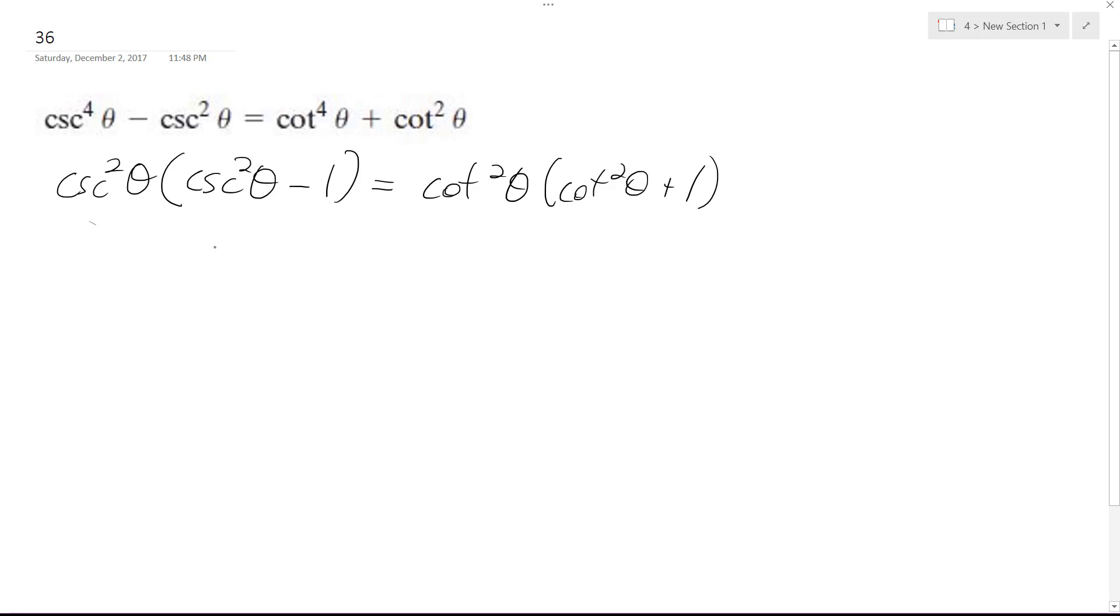Cosecant squared, so this is the same thing as a one over sine squared theta and this becomes sine squared theta, so I have common denominators and this is the cosecant squared theta.